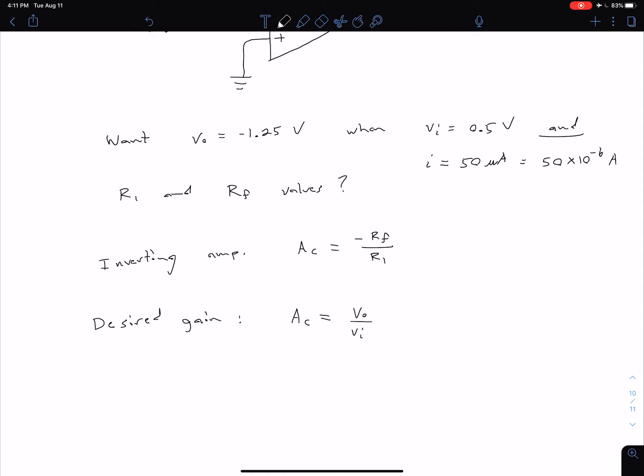And we're told here that we want this output of negative 1.25 when our input is equal to 0.5.